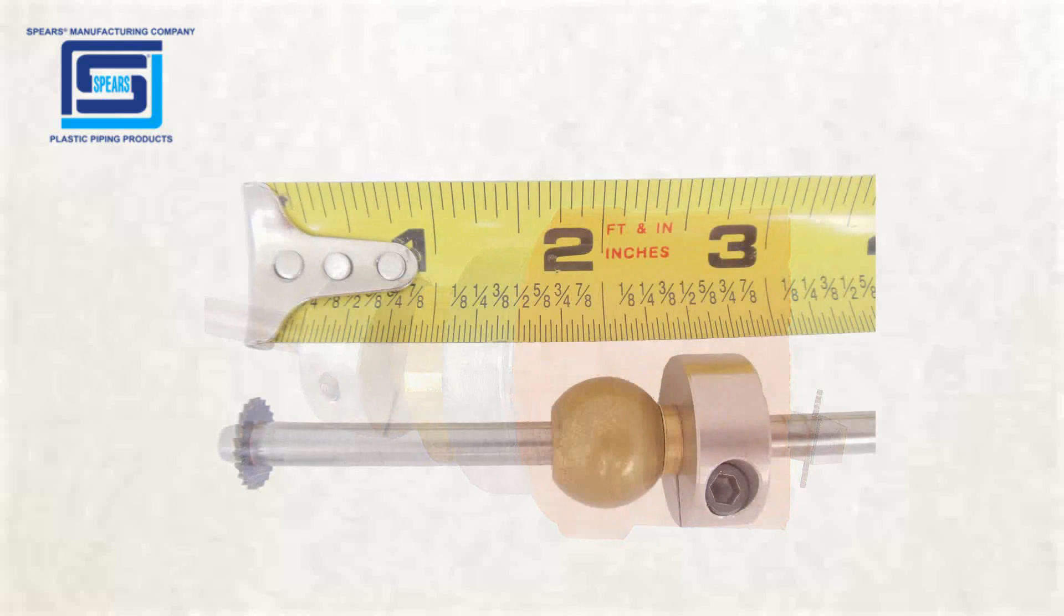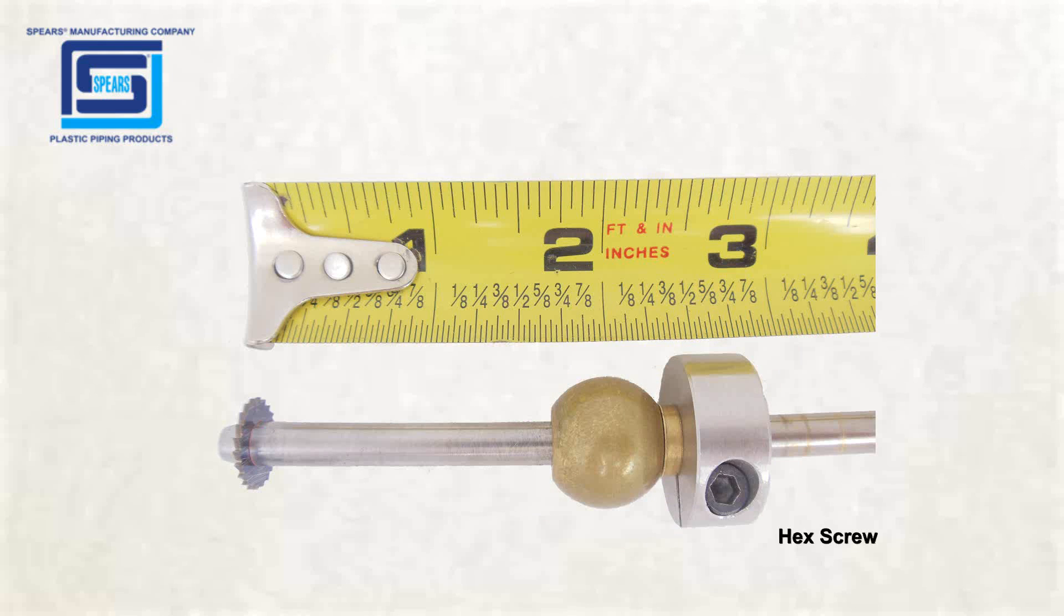For the Spears Torque Safe Head Adapter, the measurement is 2 3/8 inch. Use an Allen wrench to loosen the hex screw on the slide stop. Make the adjustment 2 3/8 inch from the top of the slide stop to the bottom of the cutting blade. This adjustment will vary depending on the head adapter.